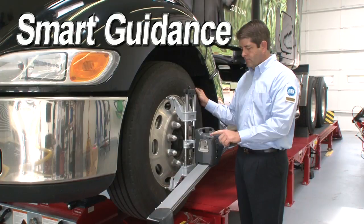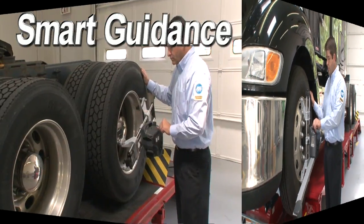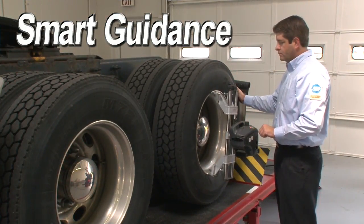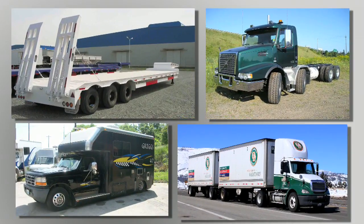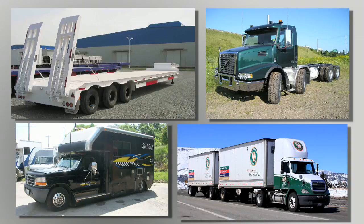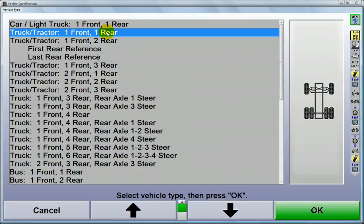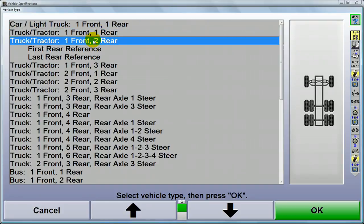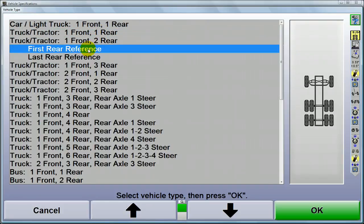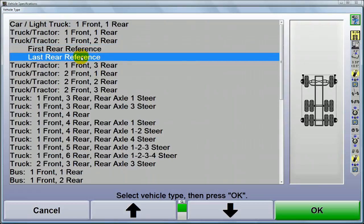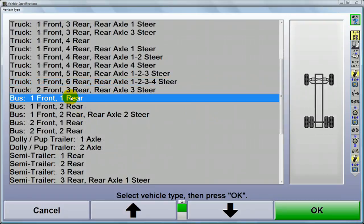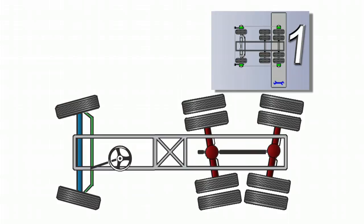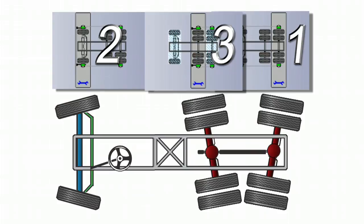To align a multi-axle vehicle accurately and efficiently, the axles should be measured and adjusted in a certain sequence. The sequence is dictated by the number of adjustable axles and their location. By selecting the vehicle configuration first, the aligner will set up and guide the technician through the most efficient sequence for that vehicle. This can mean the difference in getting it done right the first time or a costly redo. Don't assume all of your technicians know exactly what order everything should be done.